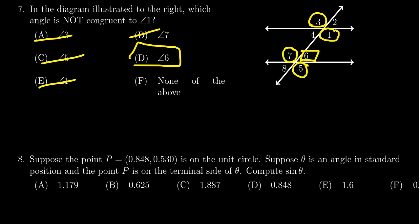Therefore, it's not necessarily true that angle 1 would be congruent to angle 6. So angle 6, which is choice D, would be the correct answer.